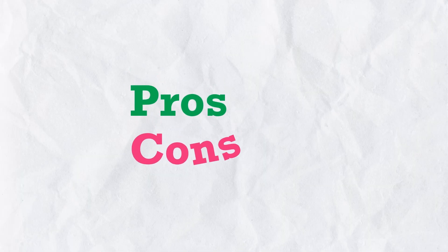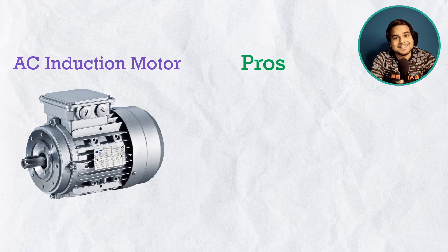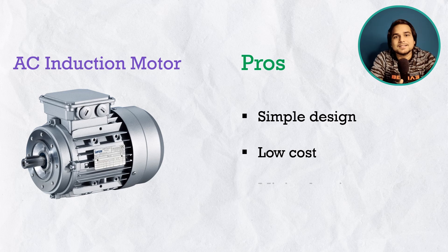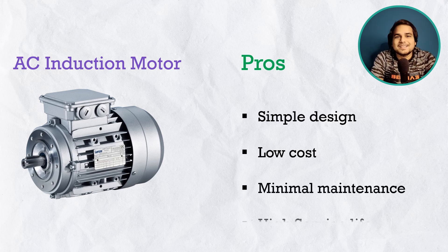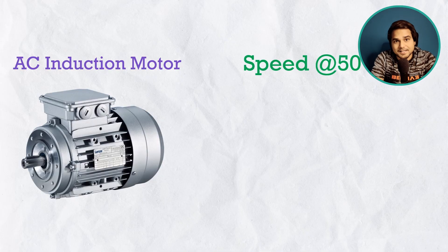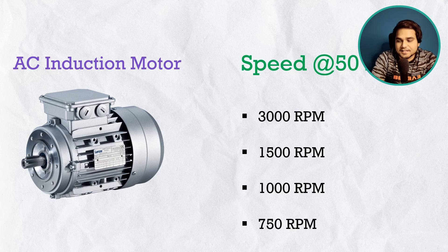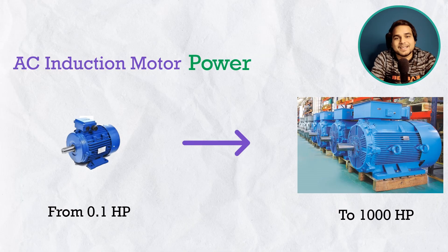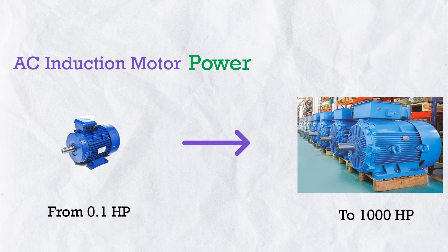The pros of the induction motor include its simple design, which keeps cost low and maintenance minimal, with a longer lifespan than most other motors. At 50 Hz, available speeds are 3000 RPM, 1500 RPM, 1000 RPM, and 750 RPM depending on the number of poles. Power range spans from a quarter HP to thousands of HP. However, rated torque is only available at rated speed.